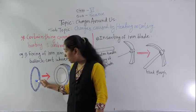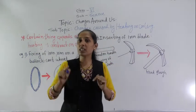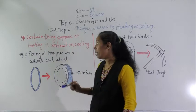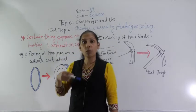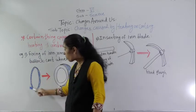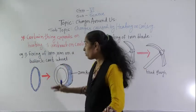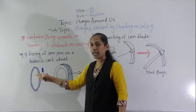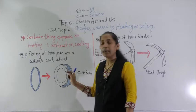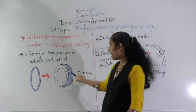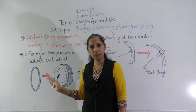The iron rim is initially smaller in size. Because metal expands on heating, the size of the iron rim increases due to heating, and now this increased-size iron rim can easily be fixed into the bullock cart wheel.